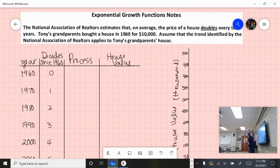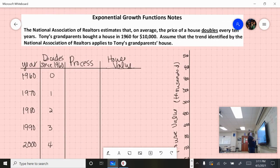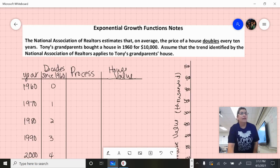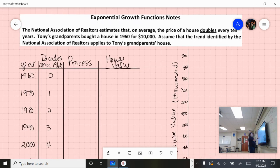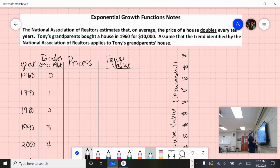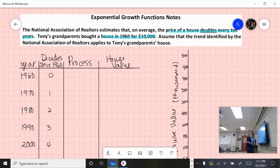As you can see, I've set up a table and a graph so we can calculate these values and graph them. First, let's look at the important information in this situation. The price of the house doubles every 10 years, and they bought the house in 1960 for $10,000. Those are the two main pieces of information we need: our starting value and what we're multiplying by each time.